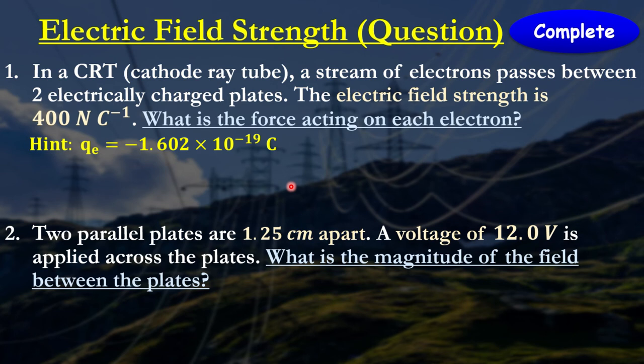Let's do some calculations. This is quite a straightforward part of the lesson. We have the cathode ray tube, and we have a stream of electrons. You have two electrically charged plates. The electric field strength is 400 newton per coulomb. What is the force acting on each electron?